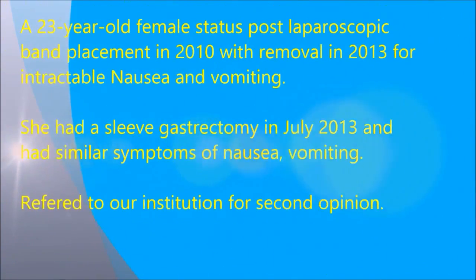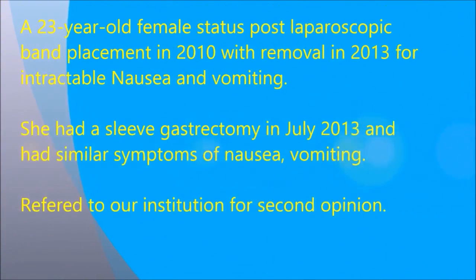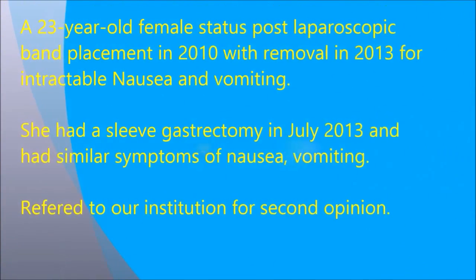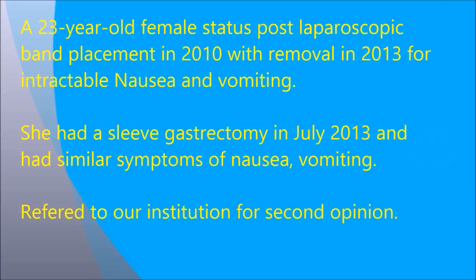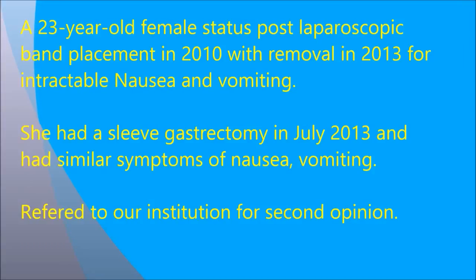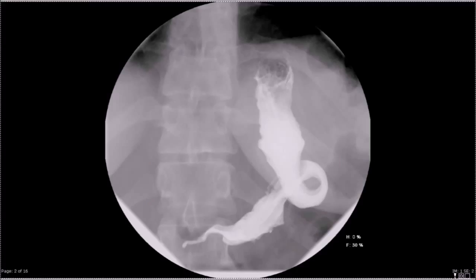A 23-year-old female with a history of lap band placed in 2010, removed in 2013 for intractable nausea and vomiting. Following that, she had a sleeve gastrectomy; however, her symptoms persisted. She was referred to our institution for a second opinion, and we obtained a swallow study showing sleeve twisting and narrowing.